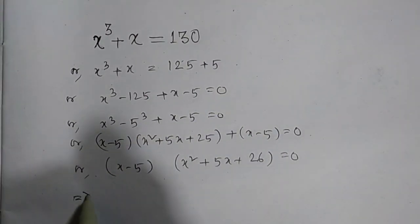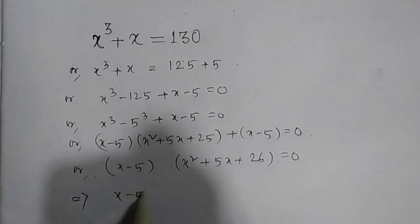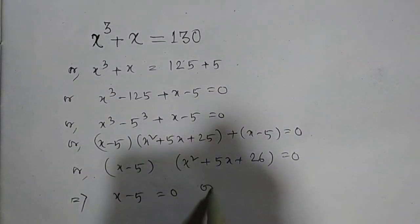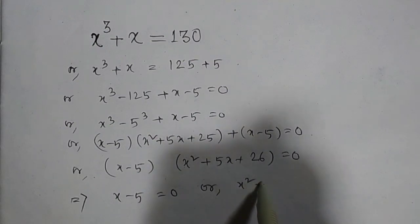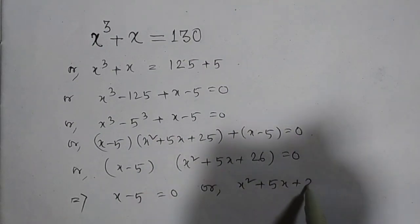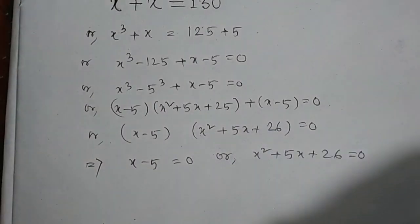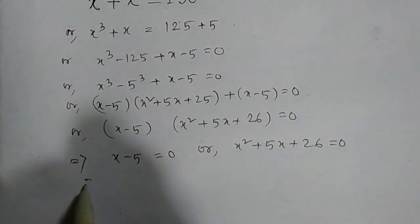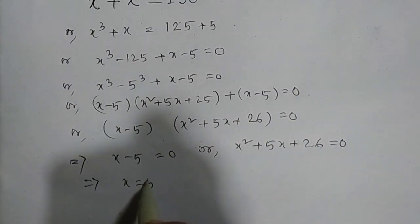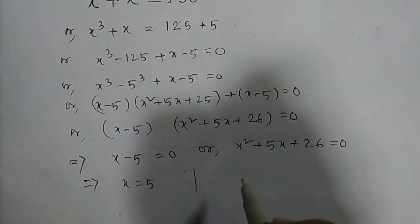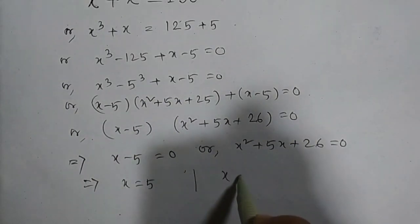This implies x - 5 = 0 or x² + 5x + 26 = 0. From here we have x = 5, and from this equation we have x equal to...